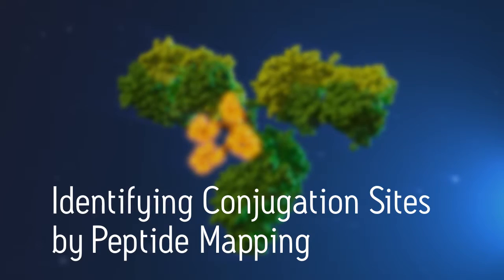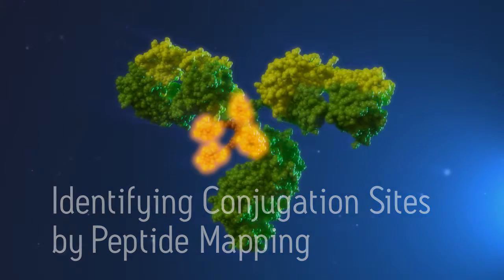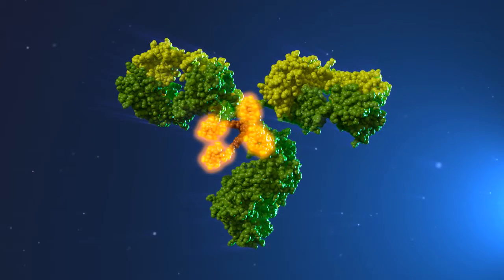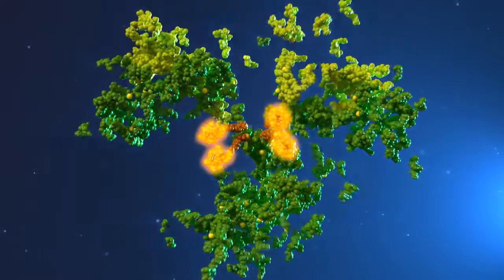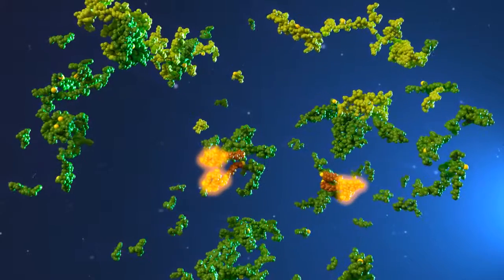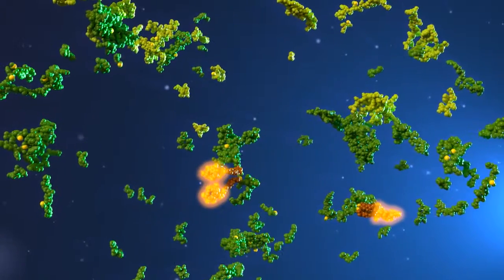Peptide mapping can be used to precisely determine the site of drug conjugation and verify the integrity of the reaction. A trypsin digest of the antibody produces a set of peptides, some containing the conjugation sites.